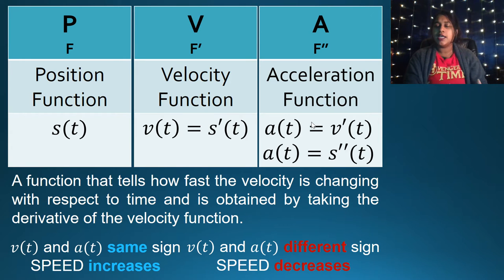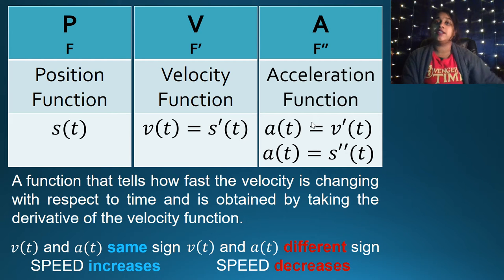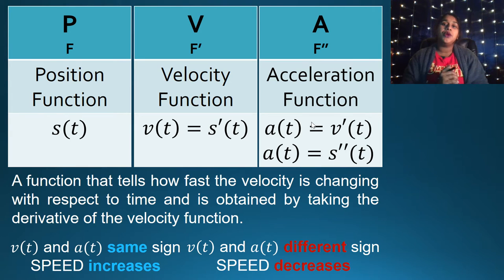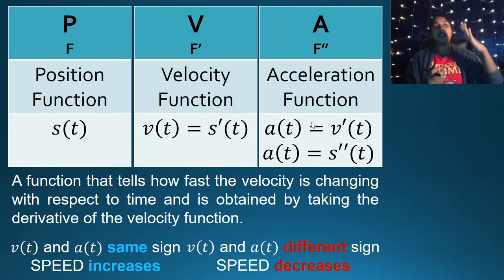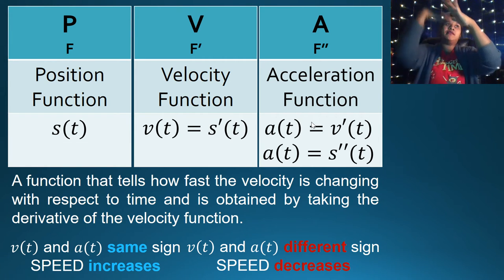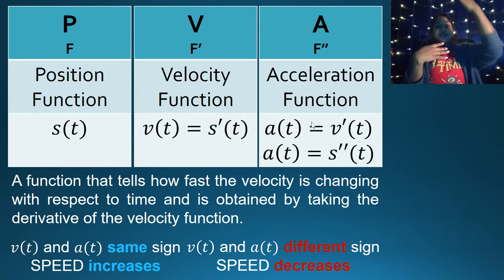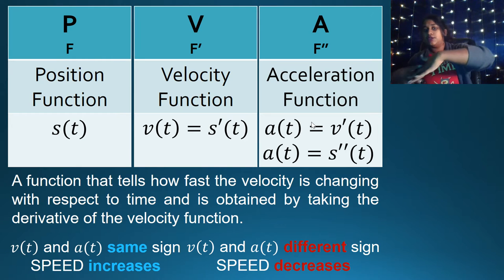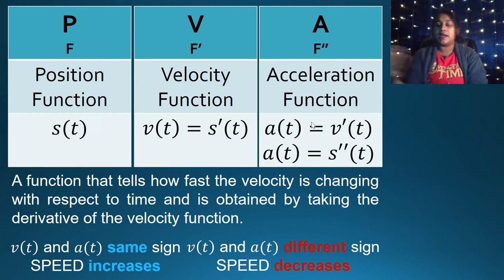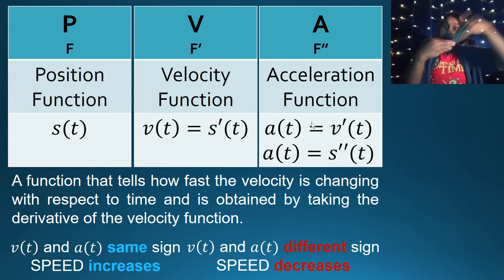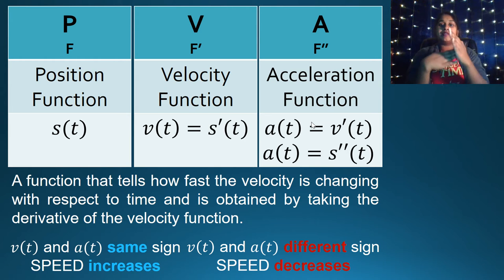Speed is not quite velocity — speed is a relationship between velocity and acceleration. Speed will always increase if both velocity and acceleration have the same sign. If velocity is above the X axis and acceleration is positive, speed increases. Similarly, if velocity is below the X axis and acceleration is negative, speed also increases. Opposite signs mean speed is decreasing.